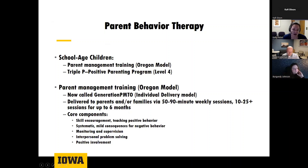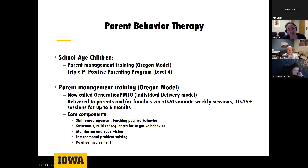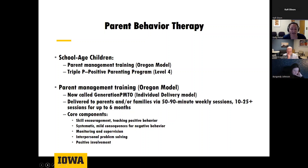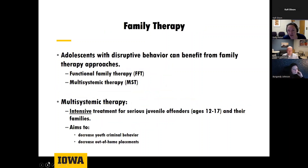For school-age children, good examples of parent behavior therapy include Parent Management Training out of Oregon and Triple P. The best evidence lies with the Oregon model, now called Generation PMTO. The focus is working with parents on school-age-appropriate skills: teaching positive behavior, teaching appropriate consequences, monitoring and supervising child behavior, problem solving between family members, and identifying opportunities for positive involvement in the child's activities.